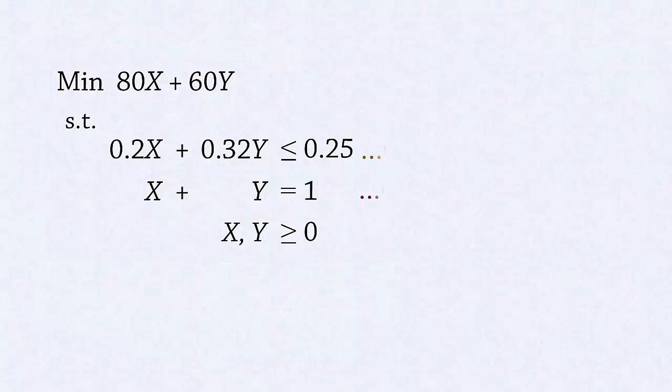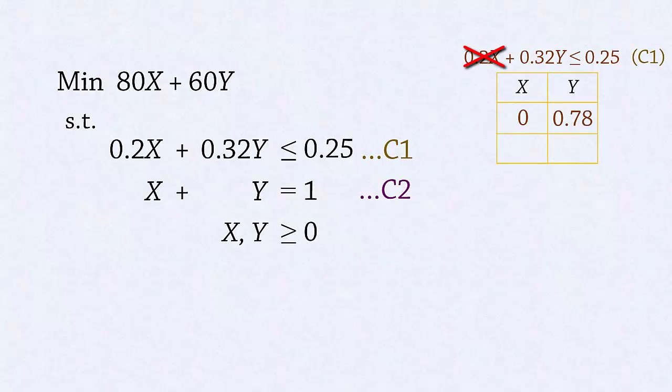Let's label the constraints C1 and C2. For Constraint 1, when x equals 0, y equals 0.78, and when y equals 0, x equals 1.25. For Constraint 2, when x equals 0, y equals 1, and when y equals 0, x also equals 1.